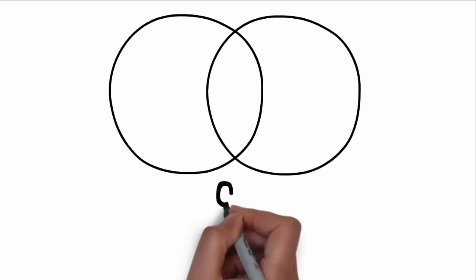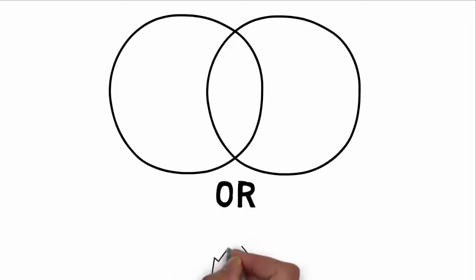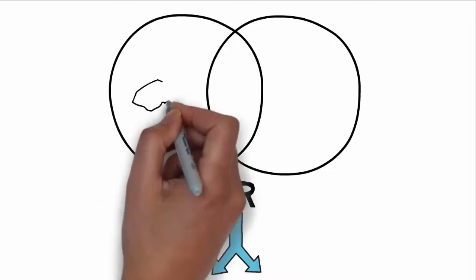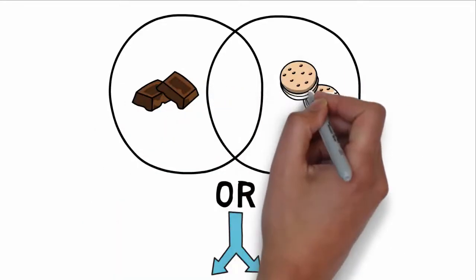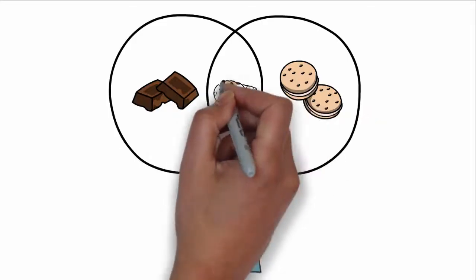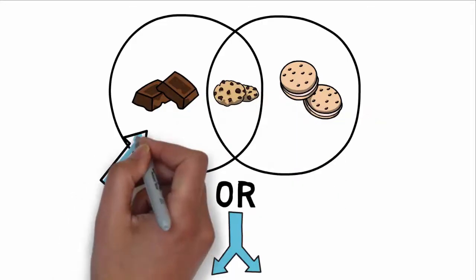In contrast, OR will search either or both terms. You can use OR when you want to increase your results. If you specify cookies OR chocolate, you will get all chocolate and all cookies, including chocolate cookies.